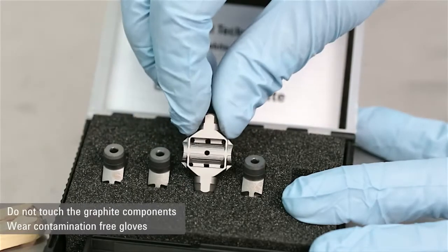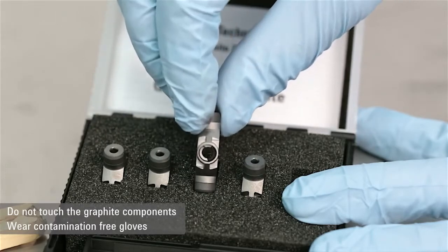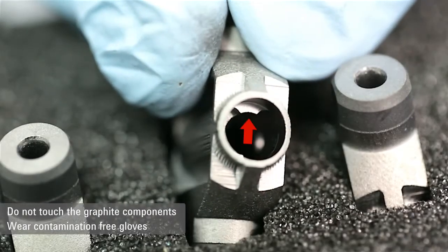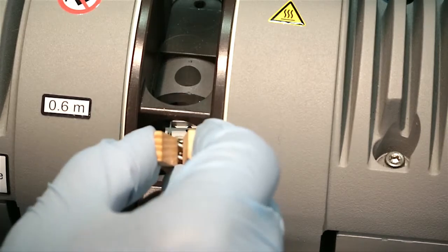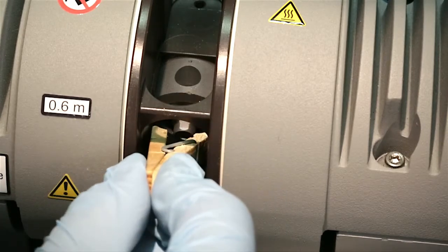Orient the tube and verify that the side of the tube securing the platform is on the left-hand side of the furnace. Using the insertion removal tool, place the graphite tube into the rear contact.